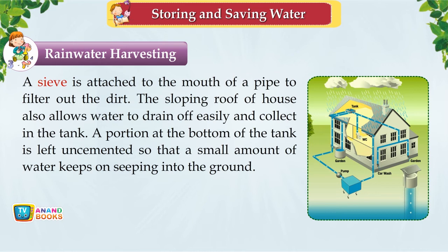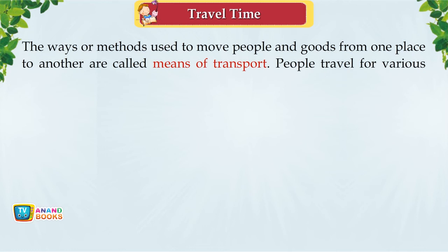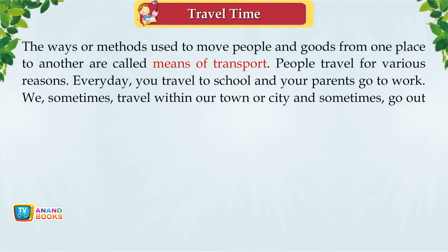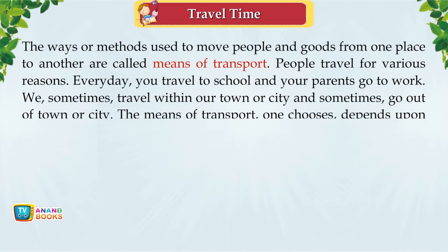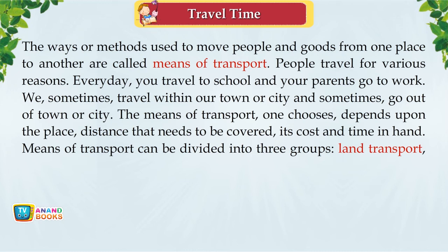Chapter 13: Travel Time. The ways or methods used to move people and goods from one place to another are called means of transport. People travel for various reasons — to school, to work, within town or out of town. The means of transport chosen depends on the place, distance, cost and time available. Means of transport can be divided into three groups: land transport, water transport and air transport.